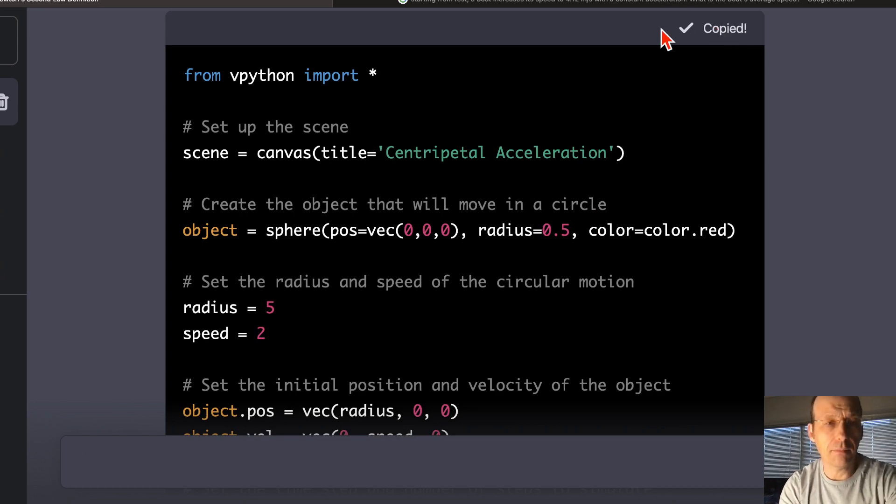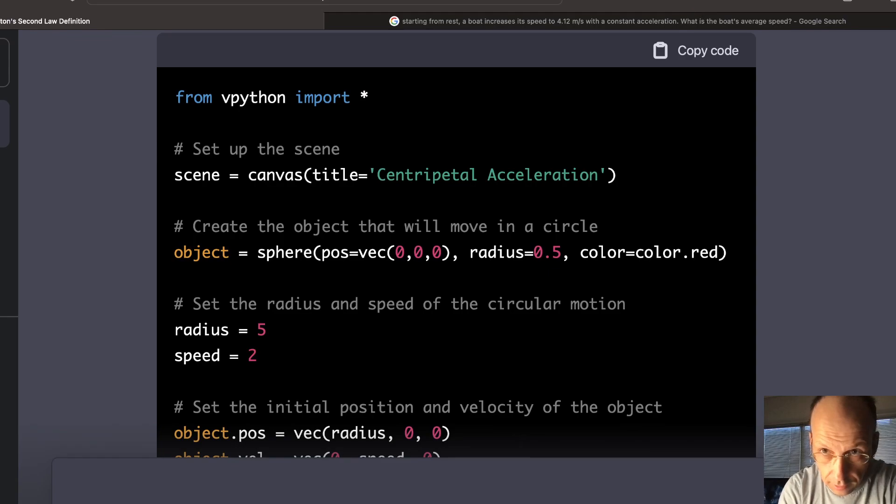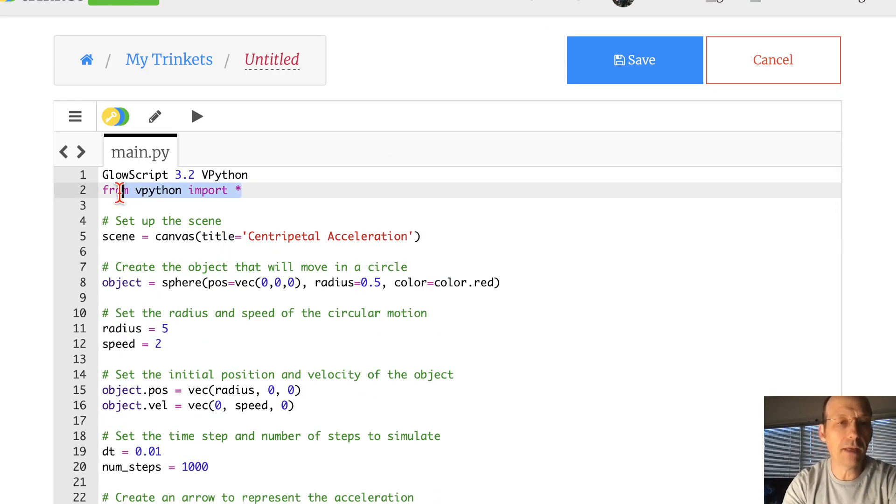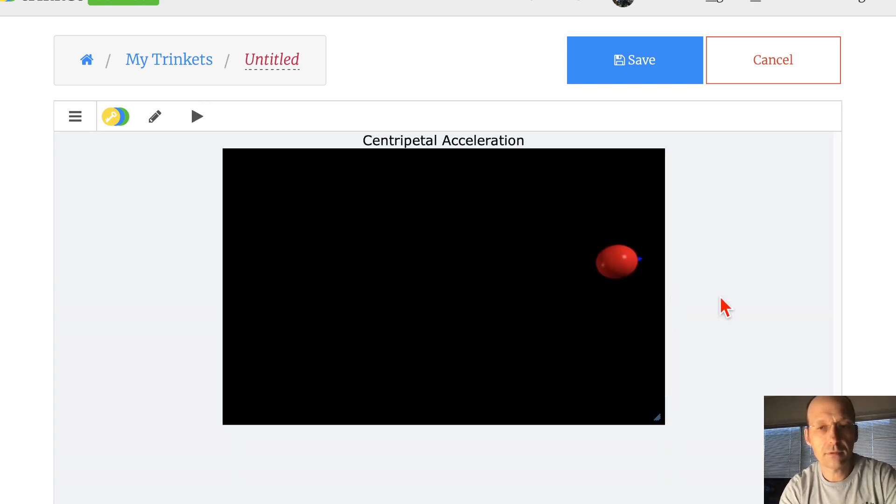And I'm going to... I have my... I have it right here, I think. Yep. So, here's Trinket. It's going to paste it. I need to get rid of the vpython. And let's just run it. Oh. It actually worked.